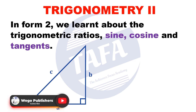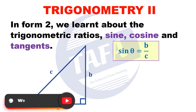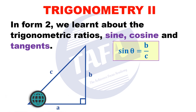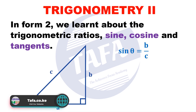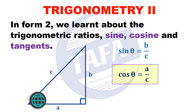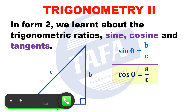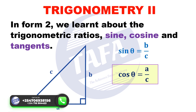We have sin θ equals the opposite side b over the hypotenuse c, so sin θ = b/c. Then cos θ is the adjacent side a over the hypotenuse c, so cos θ = a/c.